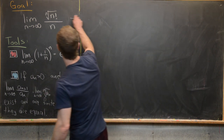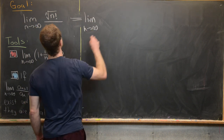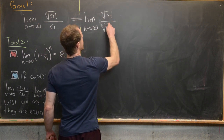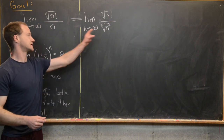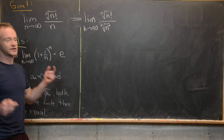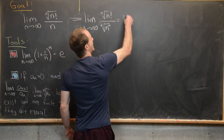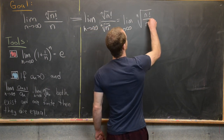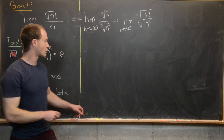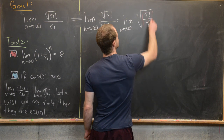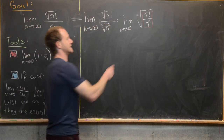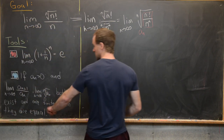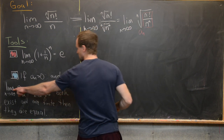The root suggests we want to write the whole thing as a root and then rewrite it as a quotient. We rewrite the limit as the nth root of n factorial in the numerator, over the nth root of n^n in the denominator. The nth root of n^n is just n, so this becomes the limit as n approaches infinity of the nth root of n factorial over n^n. Here n factorial over n^n is our a_n term.